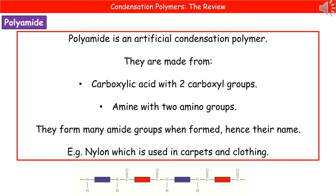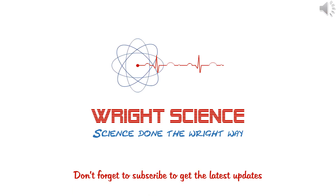Polyamides are made from a carboxylic acid with two carboxyl groups and an amine with two amino groups. When they join together, we form many amide groups — hence polyamide, many amide. A good example of this would be nylon, which we use in everything from clothing to the carpets in your house. Hopefully at the end of this video, you can explain the basic principles of condensation polymerization and describe how we make the polymers through these condensation reactions.